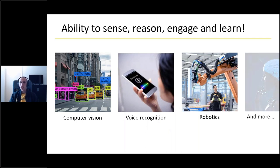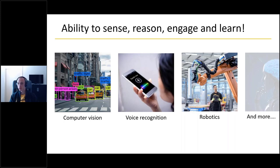Looking at the ability to sense, reason, engage, and learn - there are a lot of things already in our day-to-day life using AI. For example, computer vision, where you can recognize traffic lights, cars, and trucks in pictures or even movies. Think about voice recognition with Cortana, Siri, or Google Assistant. Also robotics in manufacturing, like building cars - most of that today is based on robotics.